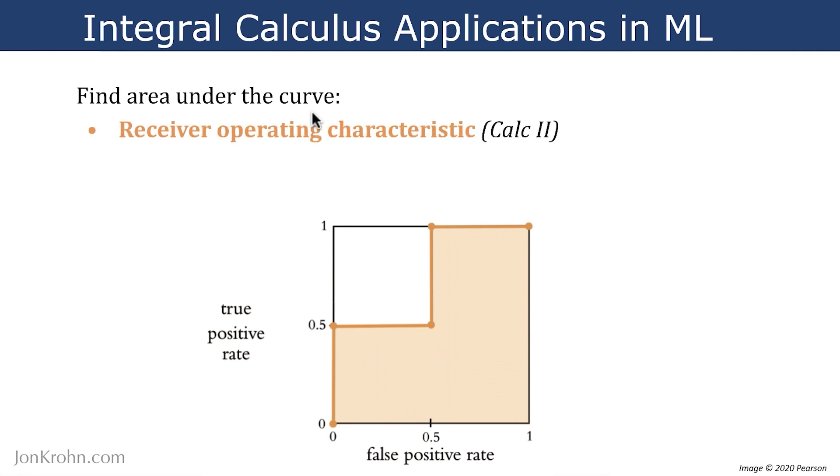Examples of situations where we want to find the area under the curve in machine learning include finding the area under the curve of this so-called receiver operating characteristic. This is something we talked about in the preceding video in this calculus subject.